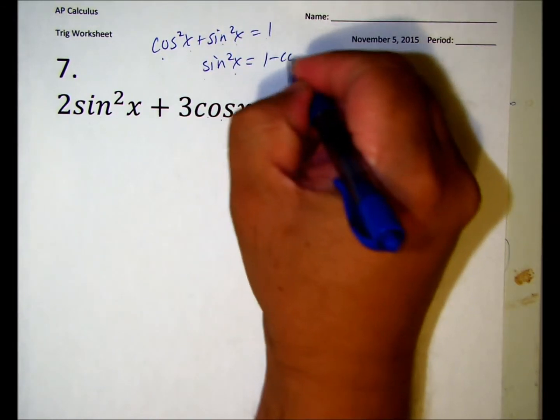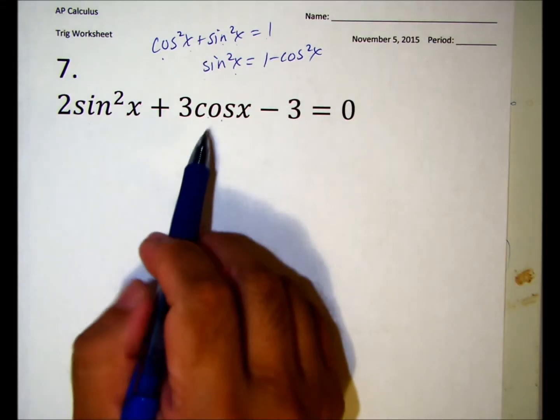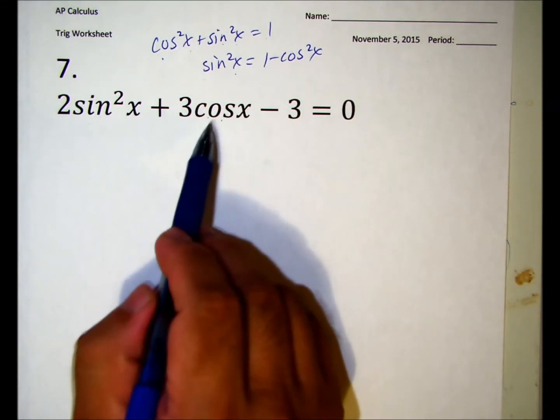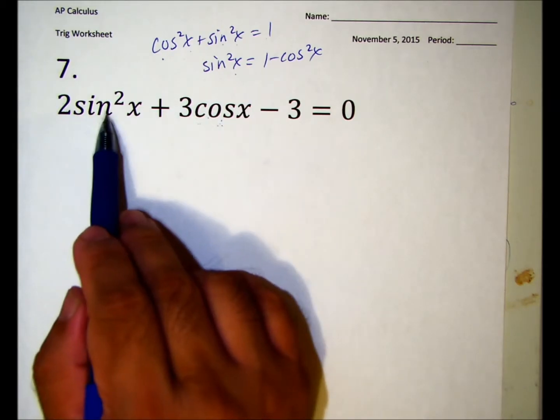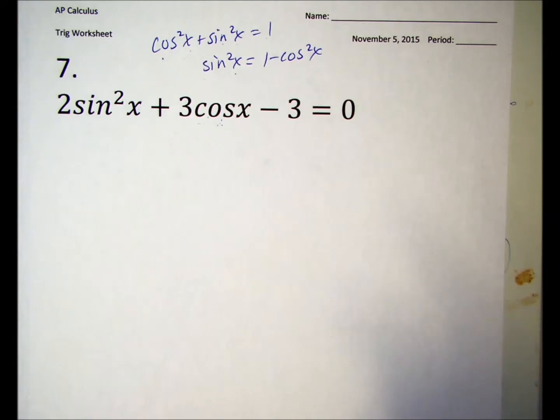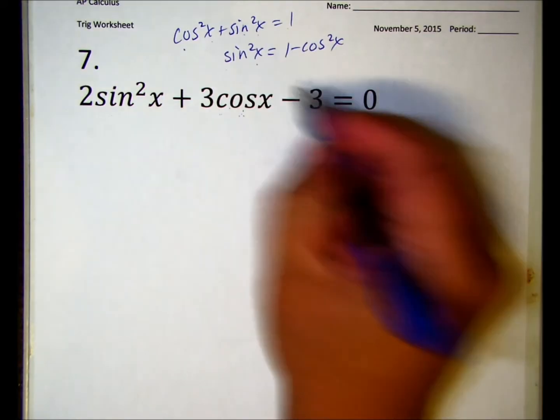There's no easy trig identity to change cosine x to a single power in terms of sine x - it involves square roots and is more complicated. So I want to do this substitution: I'm going to replace sine squared x with one minus cosine squared x.